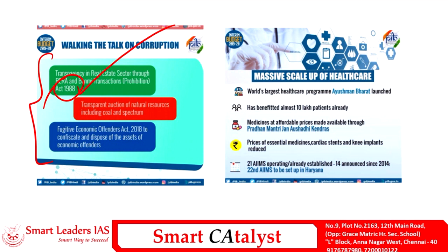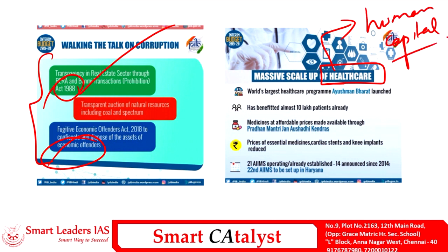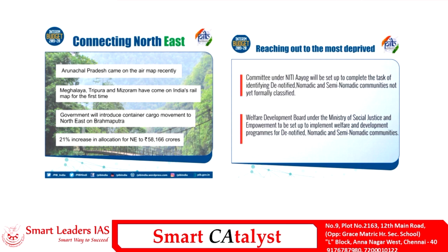The budget has also massively scaled up contributions to the healthcare system, as a good healthcare system is a basic necessity for developing human capital. Last year the government rolled out Ayushman Bharat, termed the world's largest healthcare program, providing health insurance to about 10 crore families. The beneficiaries, chosen based on the Socioeconomic Caste Census, will be provided affordable medicines via Pradhan Mantri Jan Aushadhi Kendras, developed especially in all districts of the country.